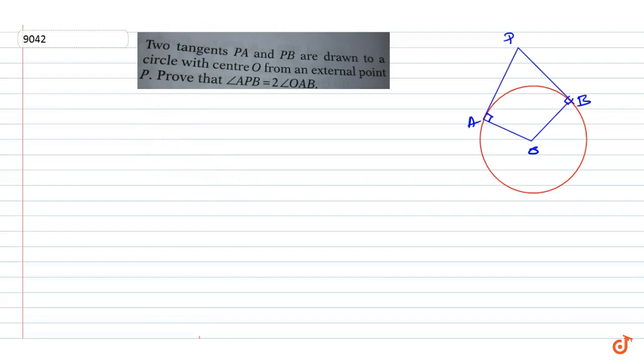In this question, two tangents PA and PB are drawn to a circle with center O from an external point P. Prove that angle APB is equal to two times angle OAB.